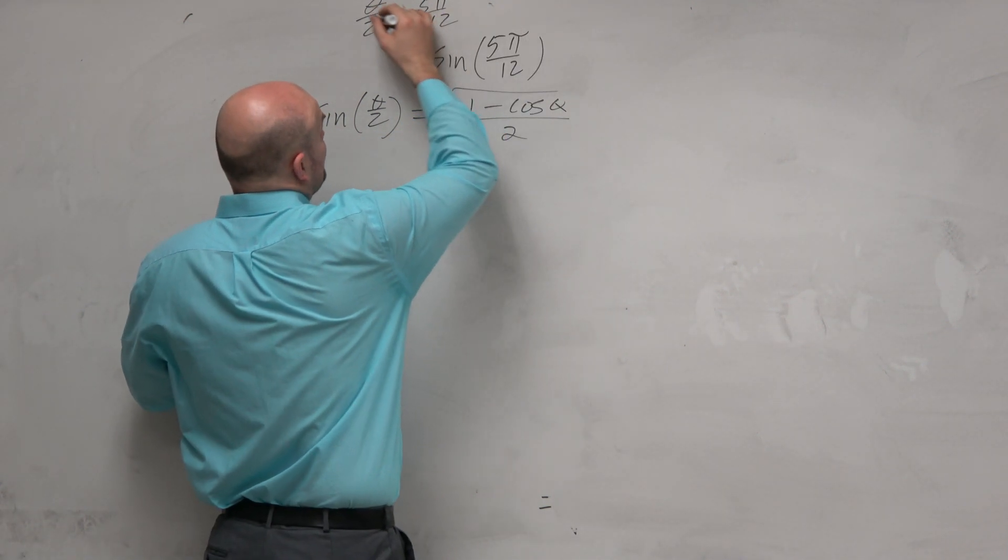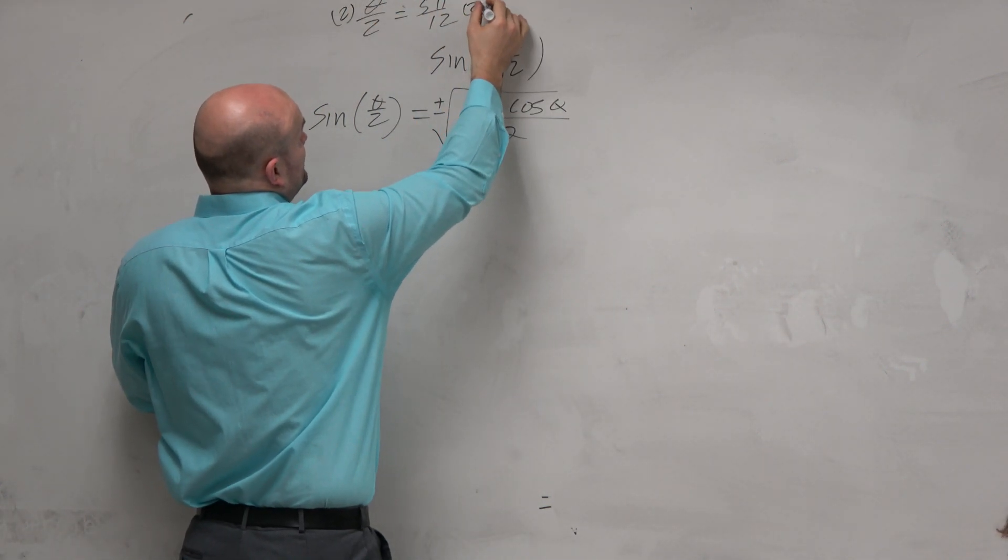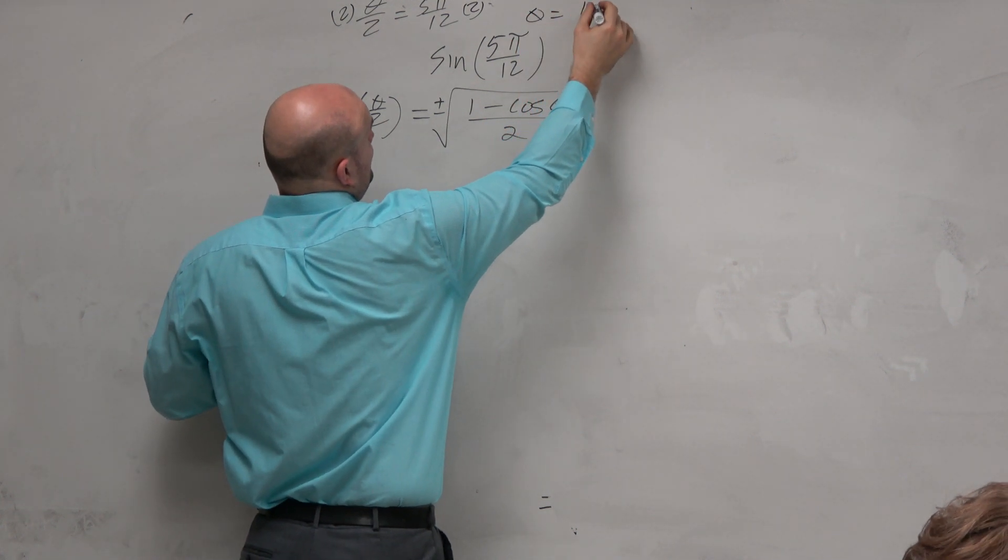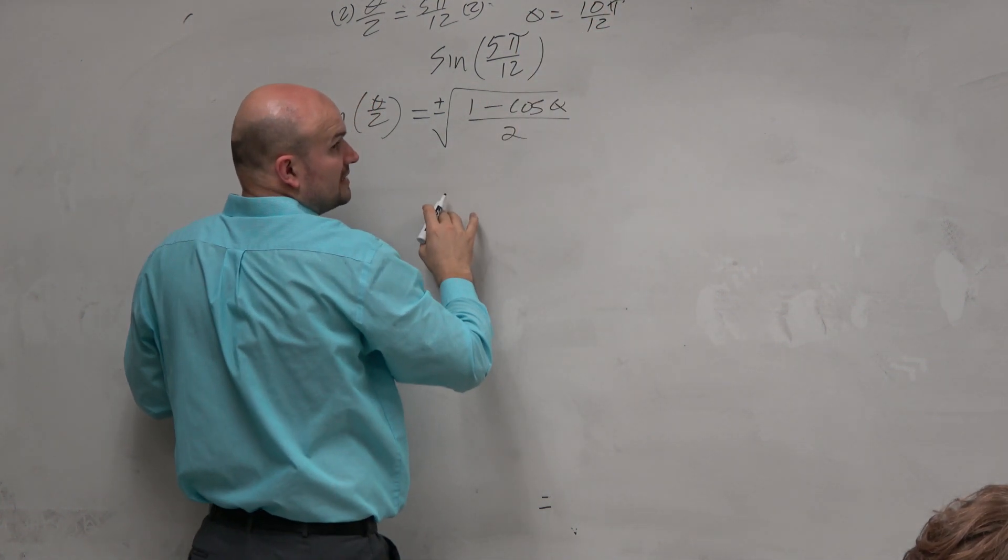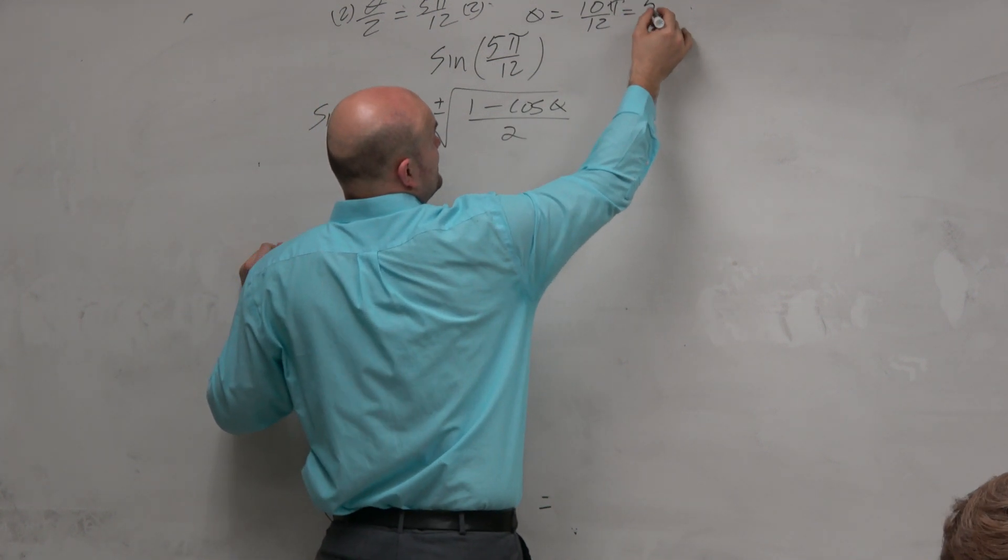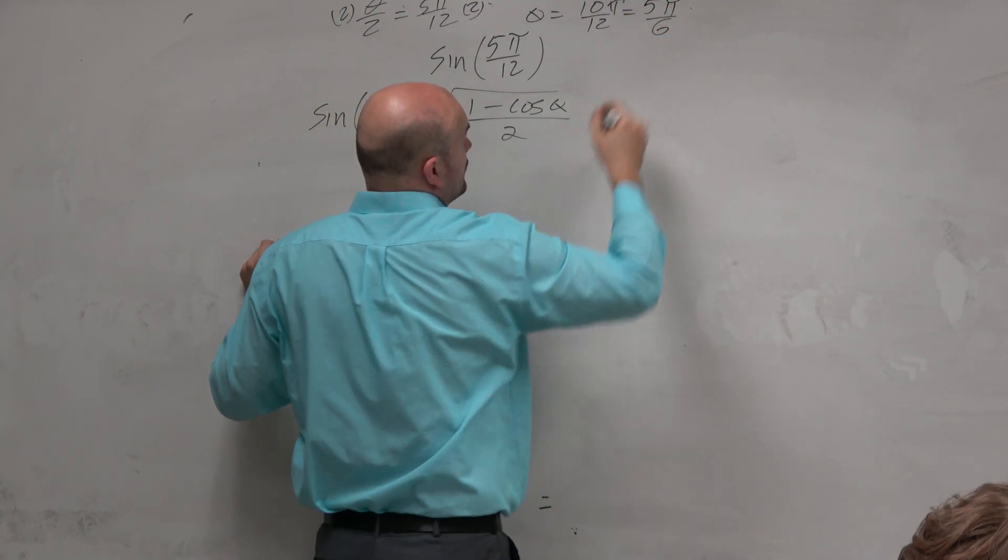So therefore, theta, which would be multiplied by 2, would equal 10π over 12, which is the same thing as 5π over 6.